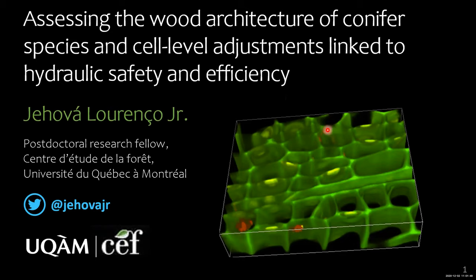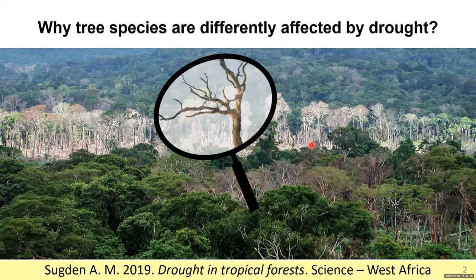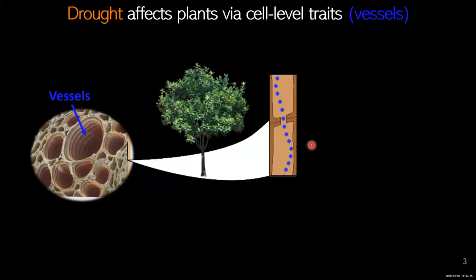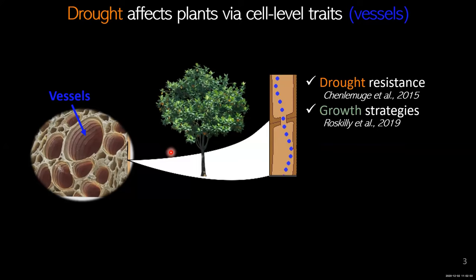It's a pleasure being here and I want to start with a question: why are tree species differently affected by drought? There are many studies trying to answer this question. I propose zooming in and investigating the cell level traits. Drought affects plants via cell level traits — specifically the vessels, which transport water from roots up to the leaves. This field of research has been tremendously increasing in the past decade, providing useful information to help us understand drought resistance in plants.